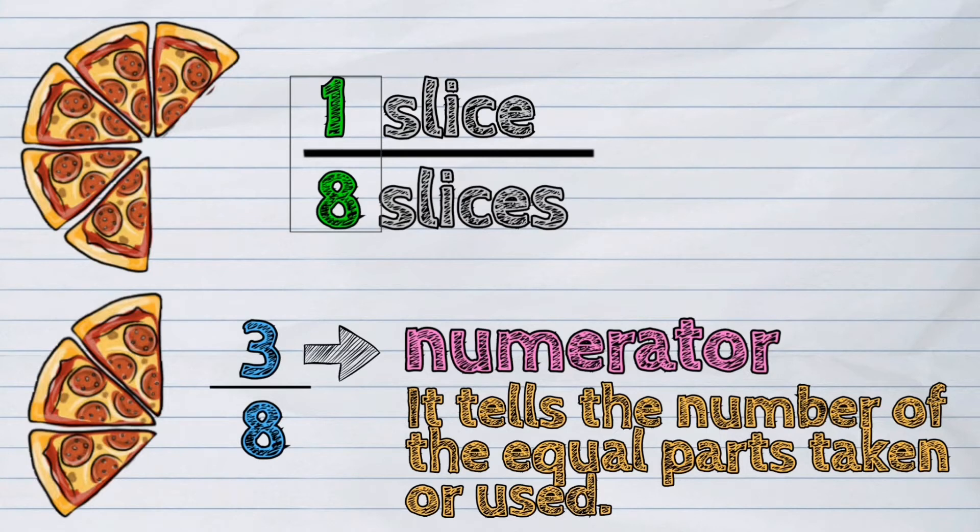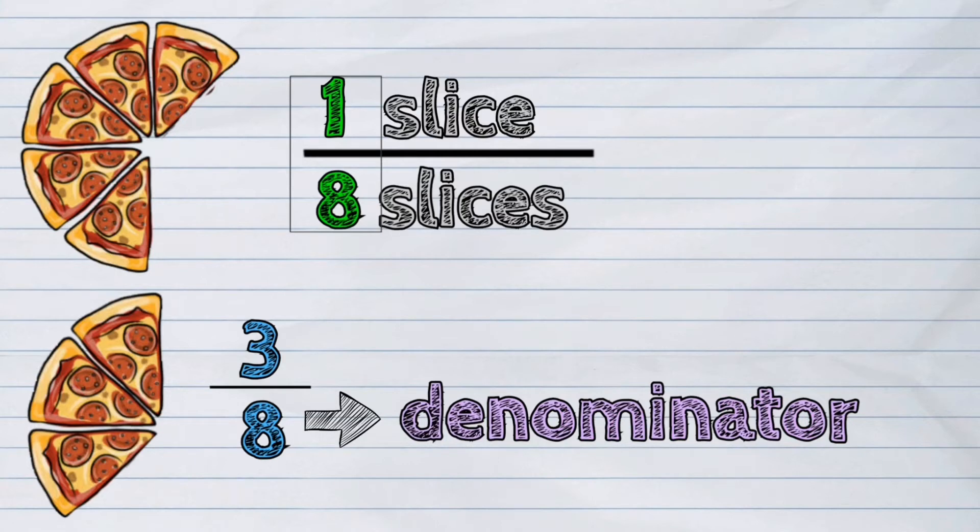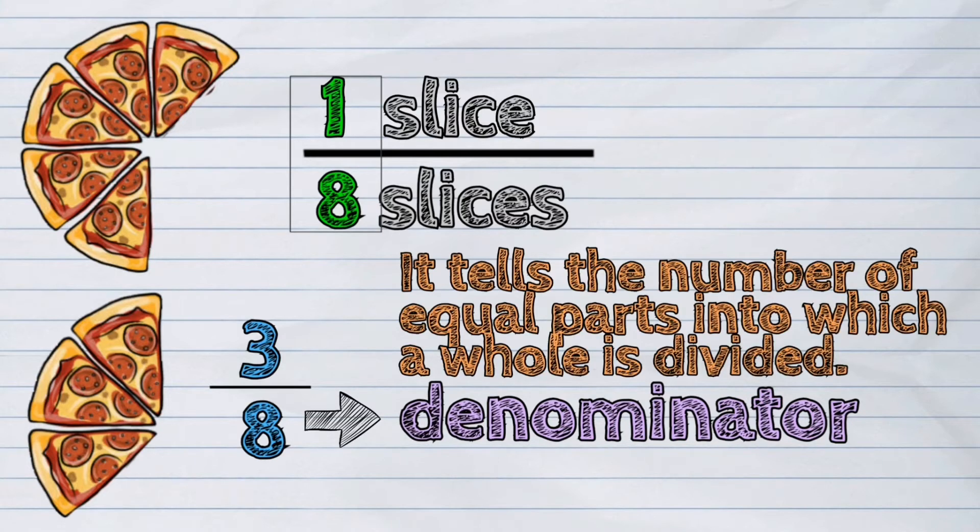And the number below, which is eight, is the denominator. It tells the number of equal parts into which a whole is divided.